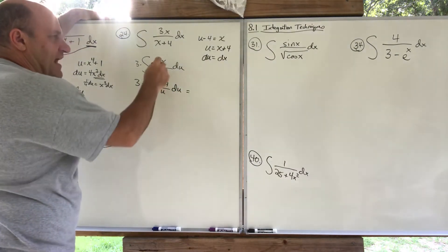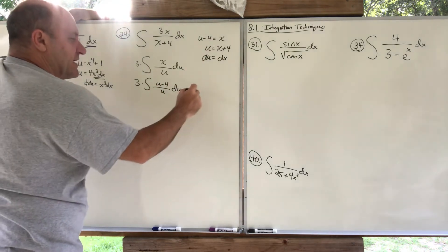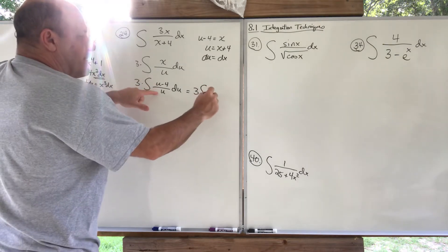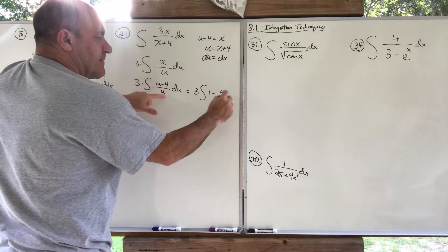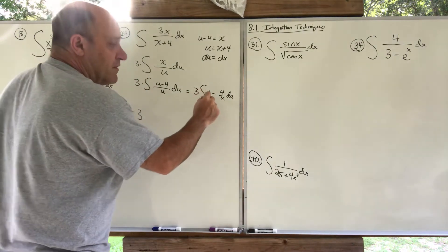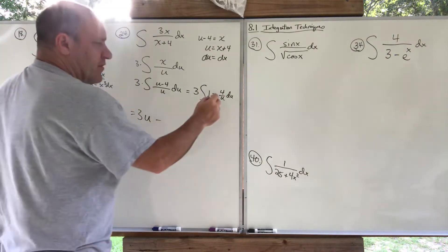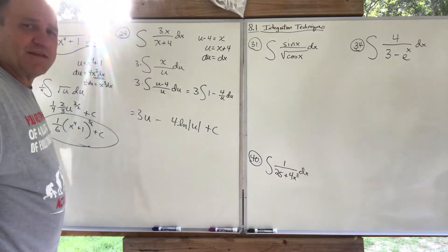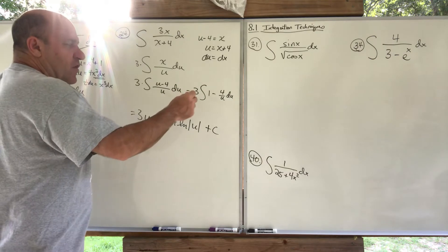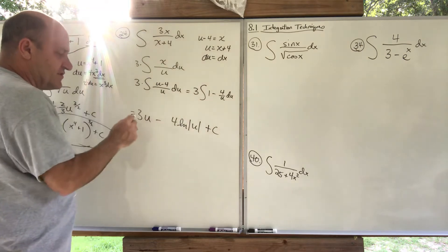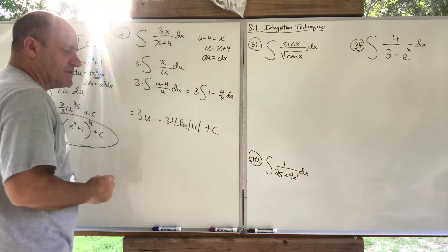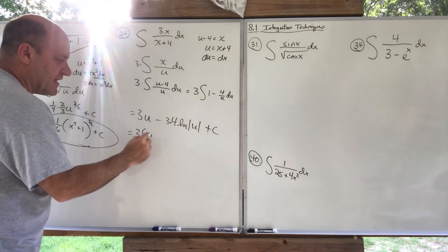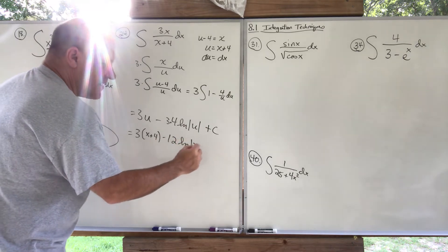The x turned into u − 4. Now I bust this up: with 3 out front and a common denominator of u, I break it into two: u/u = 1 minus 4/u. So I have two separate integrals. Integrating 1 with respect to u gives u; integrating 4/u gives 4·ln|u|. The 3 out front distributes to both, giving 3u − 12·ln|u|. Substituting back, u = x + 4: answer is 3(x + 4) − 12·ln|x + 4| + C.